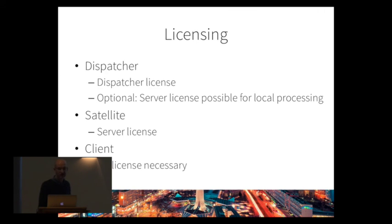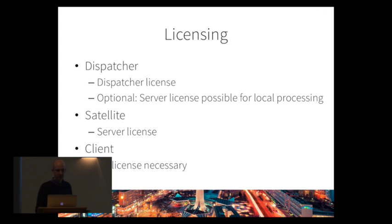Licensing: a dispatcher license costs half of a normal server license. A satellite, which does all the processing, costs a normal server license. A client — the machine that sends jobs away — requires no license at all. You can install the client on your web server without any activation and simply send jobs to your production environment.